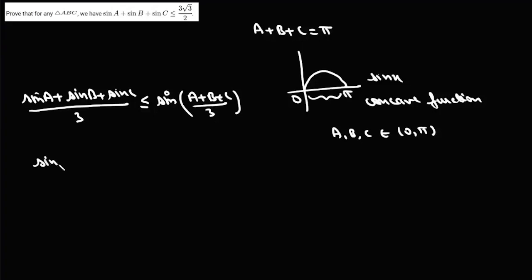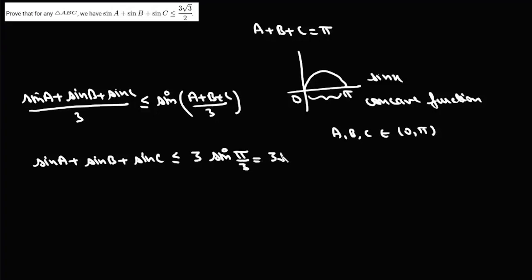Since A + B + C = π, we get [sin A + sin B + sin C] / 3 ≤ sin(π/3). Therefore sin A + sin B + sin C ≤ 3·sin(π/3) = 3·(√3/2) = 3√3/2. This proves that sin A + sin B + sin C ≤ 3√3/2.